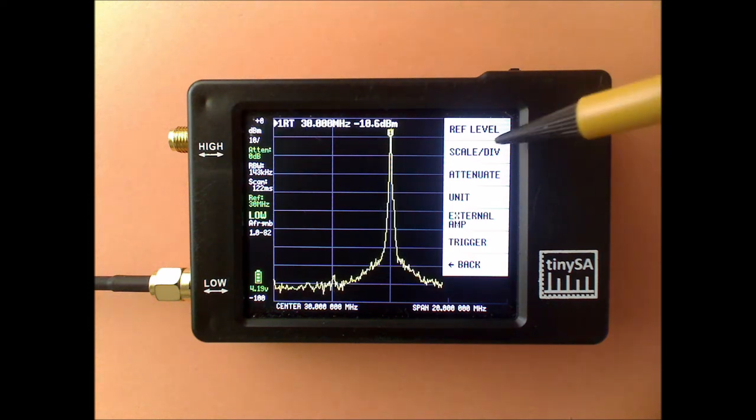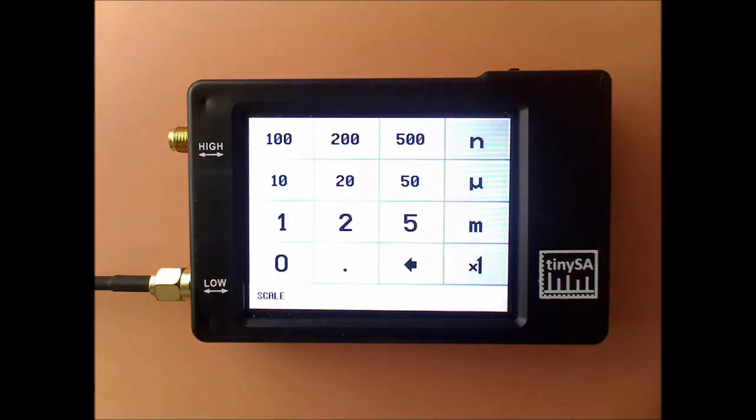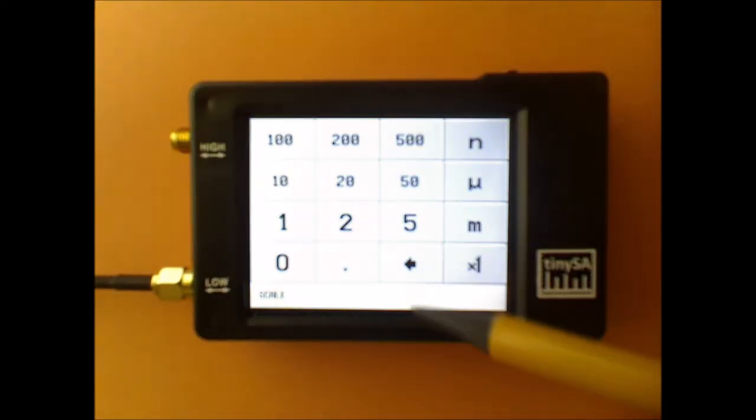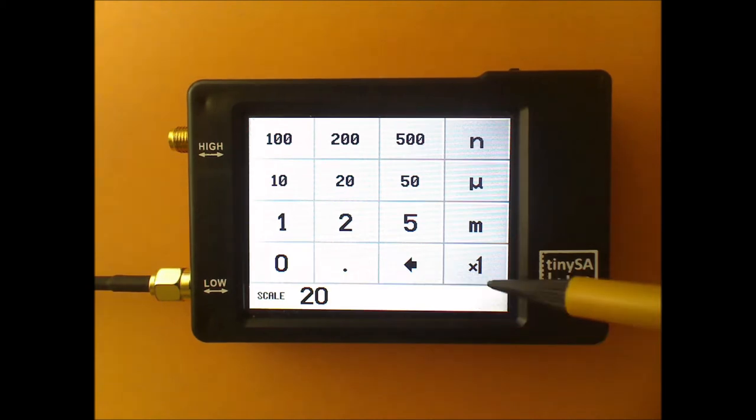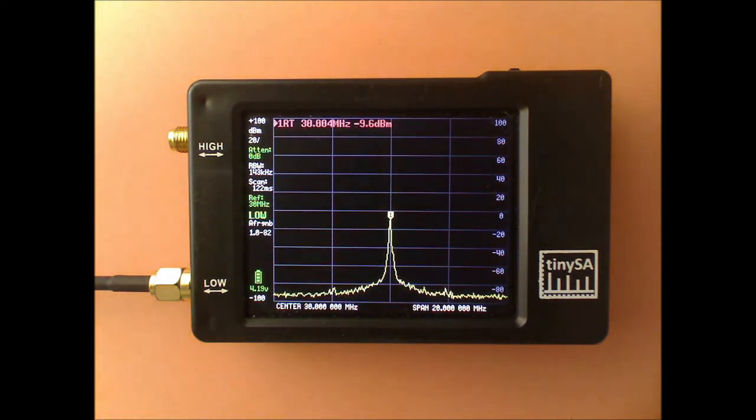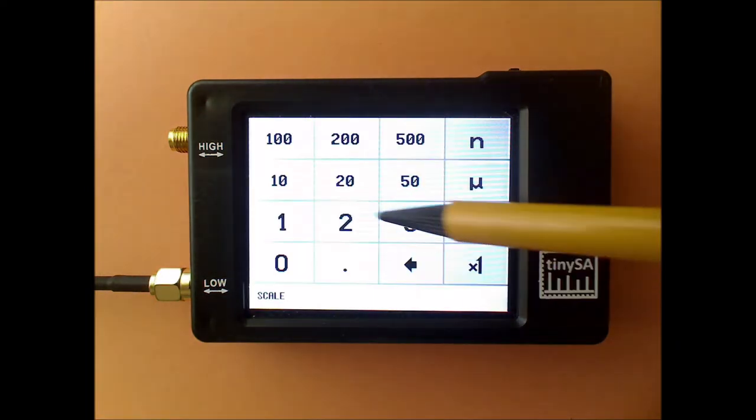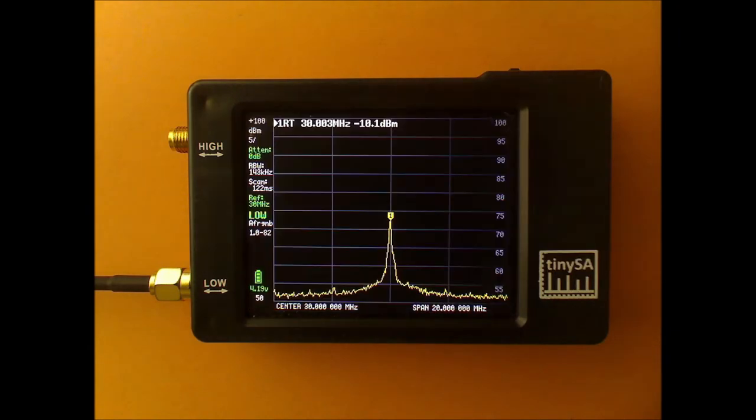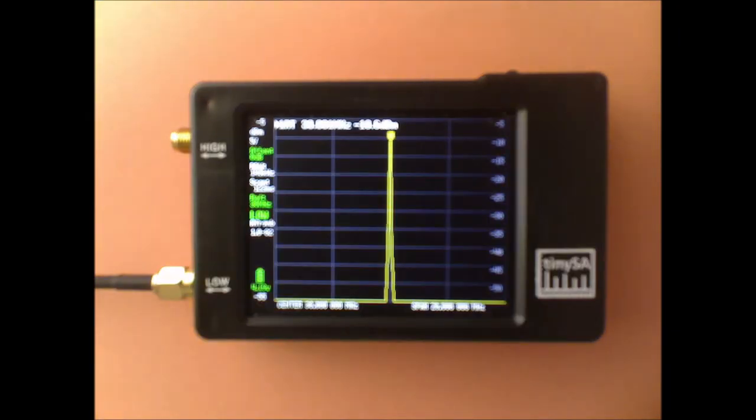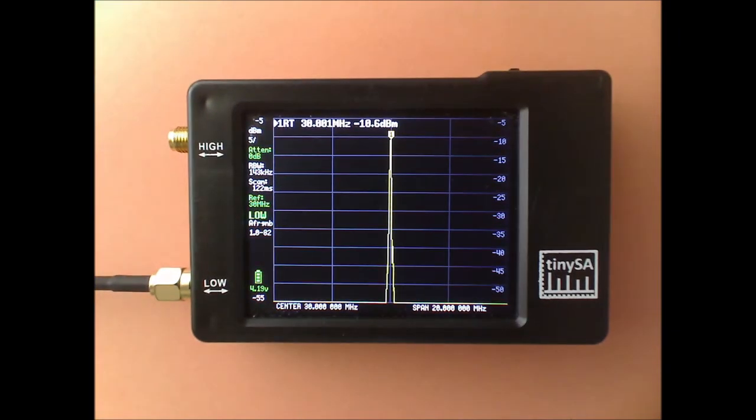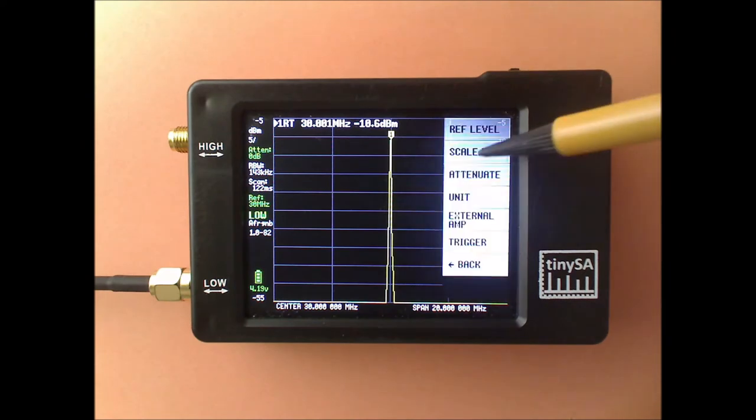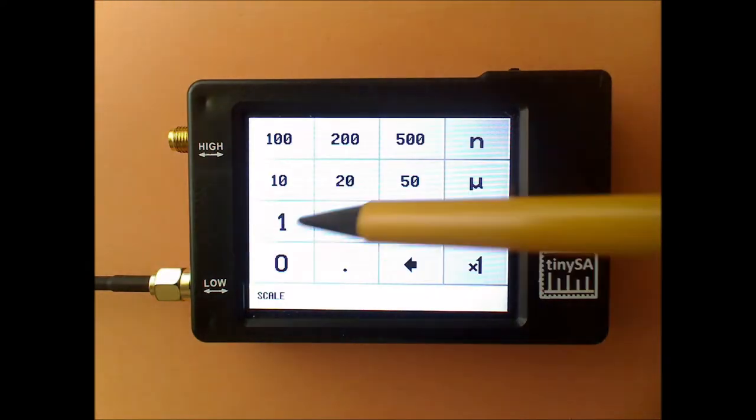But if necessary you can set it to a different value, for instance if you have strong signals you can go for 20. But if you want to see a lot of detail then you can also set it to 5, and back again to 10.